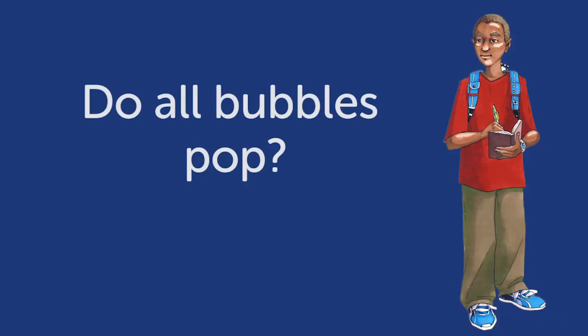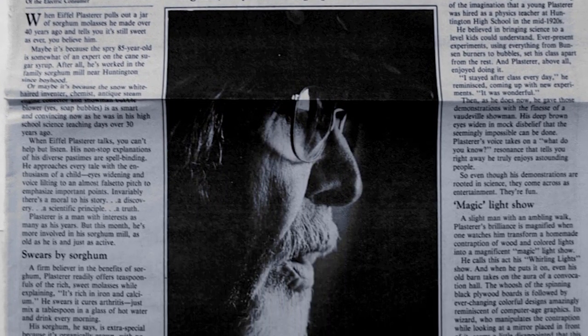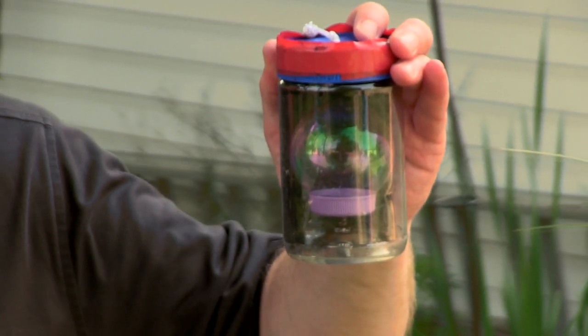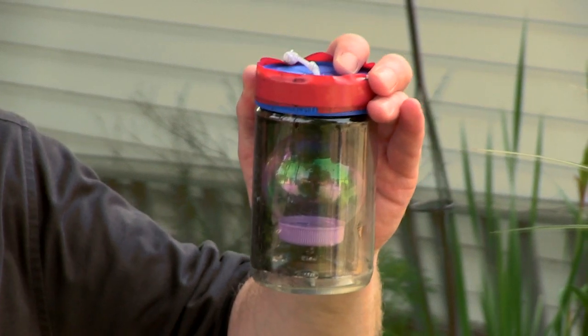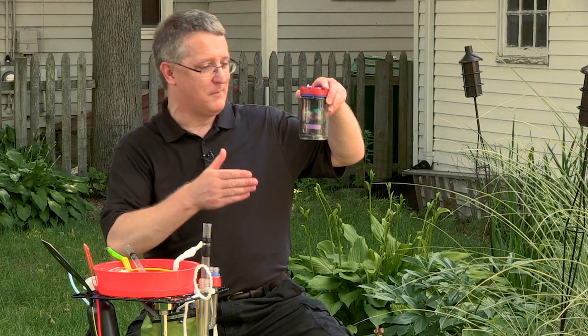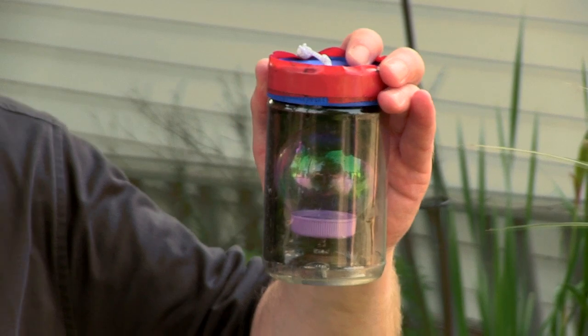All soap bubbles will pop because they're just made out of a liquid after all, but you can get them to live longer. There's a guy, Eiffel Plasterer — it was around about 50 years ago — and he blew a bubble that lived for 340 days, almost a year. What he did was he kept his bubbles in jars. He protects them from fingers that will poke them and from air that will dry them out. So he figured out how to make a bubble live longer, again by using engineering and solving the problem a different way.